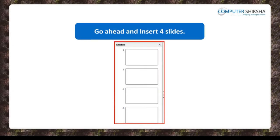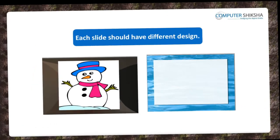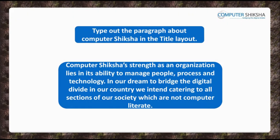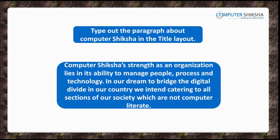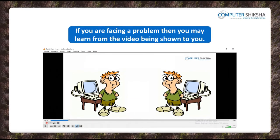Go ahead and insert four slides. Make sure that each slide has a different design. In the first slide, from the layout, choose Title Slide Layout, and then type out the given paragraph about Computer Shiksha. Next, show how you will use the Bold, Italic, and Font Color formatting on one of the lines. If you are having a problem, then you may learn from the videos being shown to you.